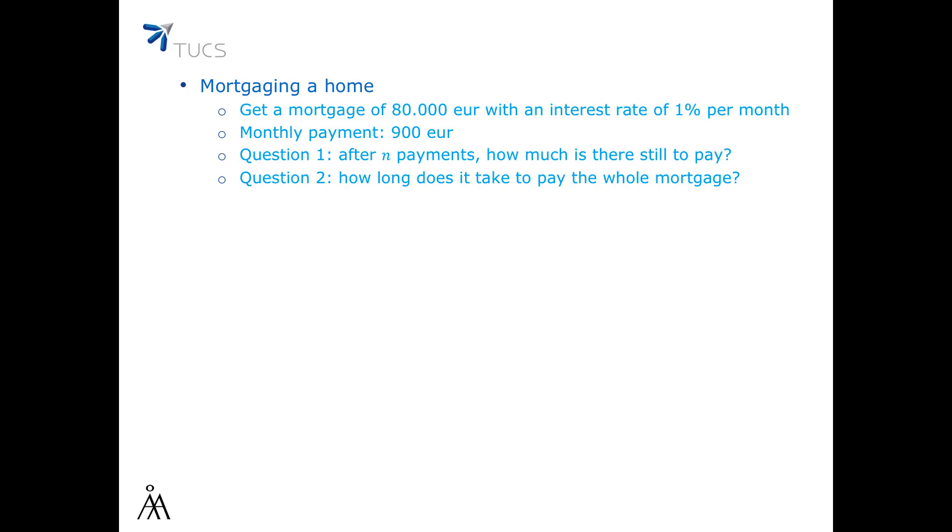Let's take another example, getting a home mortgage from the bank. Let's assume that the deal you get is for a 1% interest rate for a mortgage value of 80,000 euros with a monthly payment of 900 euros. We want to write a model that's able to answer two questions: How much do you still have to pay after N months? And how long does it take to pay the whole mortgage?